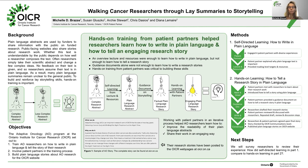Plain language abstracts are important for information sharing. They are used by funders to share information with the public on funded research, as well as on public-facing websites by research institutions. Whether this text is understandable by the public depends on how well a researcher composes it. Often researchers simply take their scientific abstract and change a few big words and complex ideas. No one gives the researcher feedback, and so researchers presume their text is in plain language. As a result, many plain language summaries remain unclear to the general public.